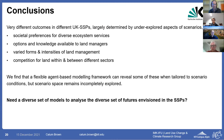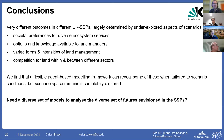To offer some tentative conclusions: we see very different outcomes across different SSPs, and these are largely determined by relatively underexplored aspects of the scenarios — things like societal preferences for different ecosystem services, the options and knowledge available to land managers partly through social networks, the possibility for varied forms and intensities of land management, and the extent to which different land sectors compete with one another. We found that agent-based modeling can reveal some of these factors, but areas of scenario space remain unexplored, suggesting we need a diverse set of models to analyze the very diverse futures envisioned in the SSPs. That's something we can return to tomorrow in the discussion session.